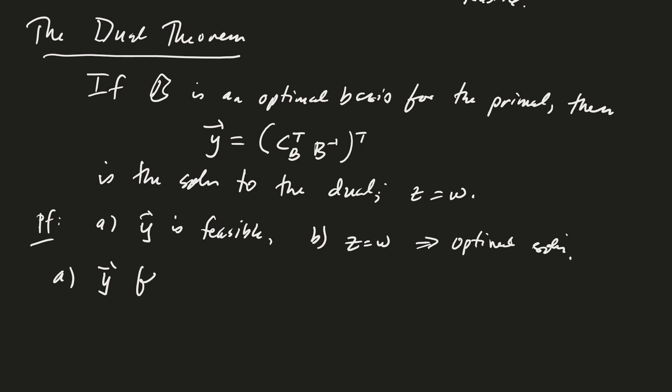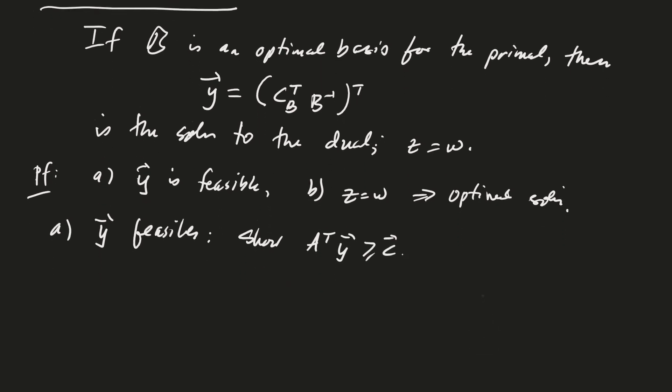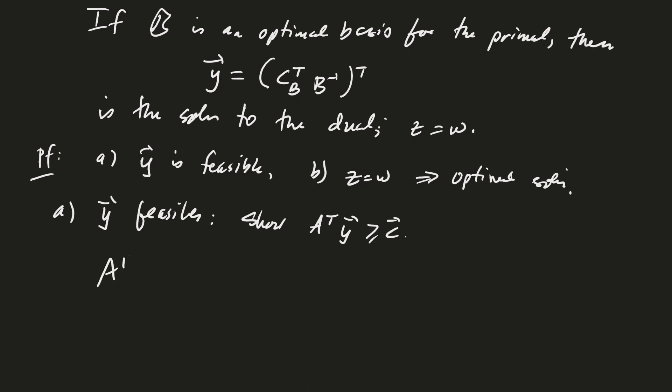Now part A, y is feasible. How do I show that? We must show that A transpose y is greater than or equal to c. So let's go ahead and just plug that in. A transpose and my y value that I'm looking at is c_B transpose B inverse transpose. And the question is, is this greater than or equal to c? Well, if we look at this, let's get rid of the transposes. So I'll transpose both sides. Then this can be written in reverse order: c_B transpose B inverse A is greater than or equal to c transpose.